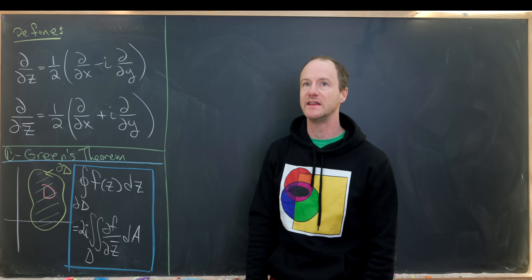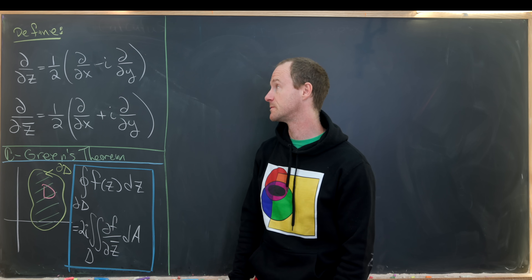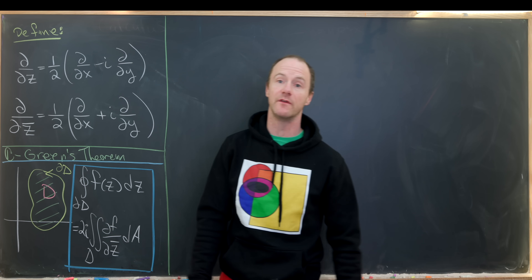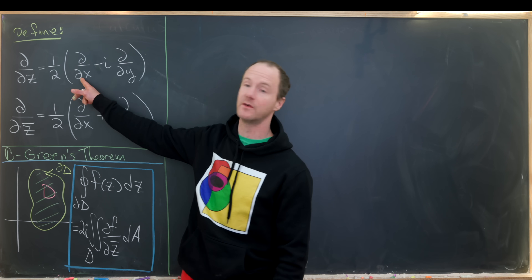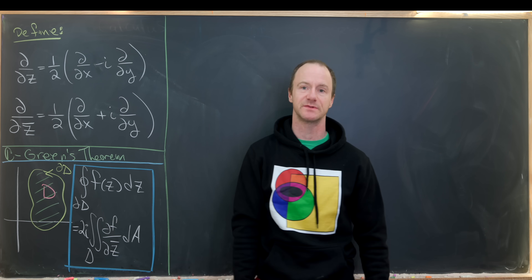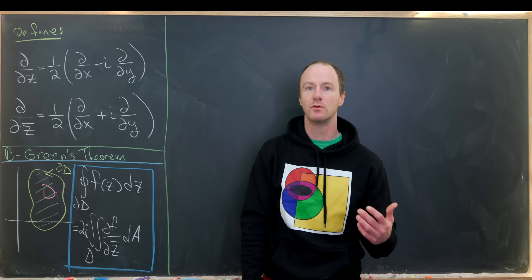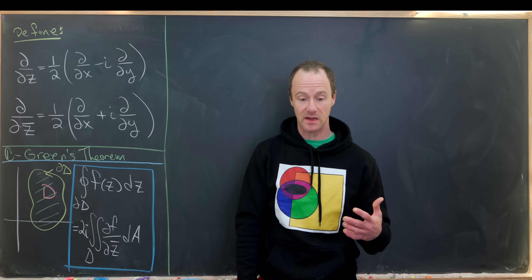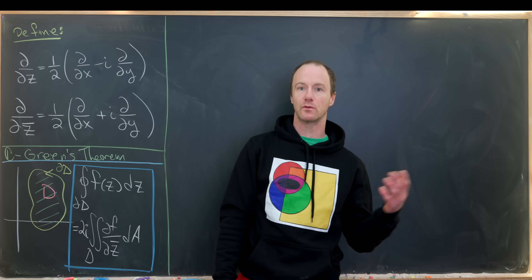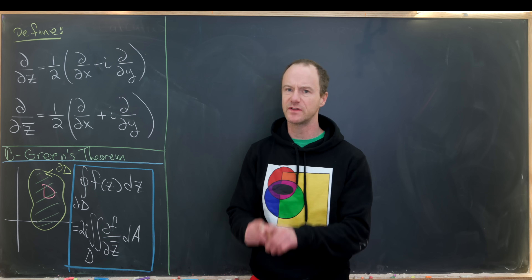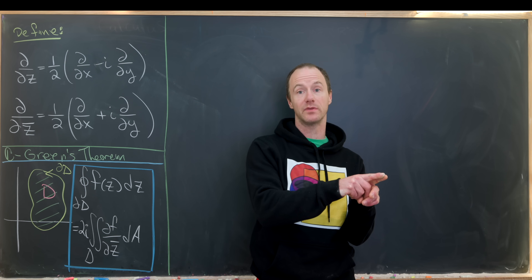In order to do this we're going to need some derivative operators that operate on functions with complex variables. The first is sometimes called the partial derivative with respect to z, defined to be one half the partial derivative with respect to x minus i times the partial derivative with respect to y. We view a function of a complex variable z as being a function of two real variables x and y, where x is the real part of z and y is the imaginary part. This is the duality between multivariable calculus and single variable complex calculus.